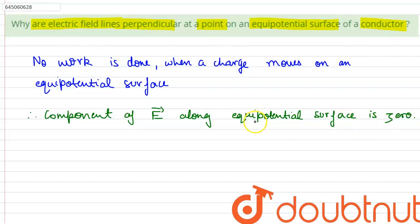This means that the electric field intensity is perpendicular to equipotential surface. Hence, the surface is perpendicular to field lines.